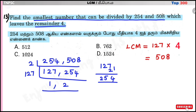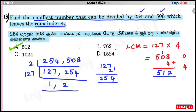LCM is 508. Since we need a remainder of 4, we add 4 to 508, giving 512. The smallest number divisible by 254 and 508 leaving remainder 4 is 512. The option is 512.